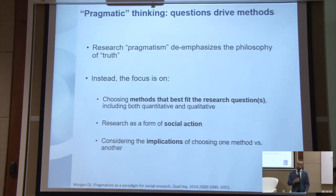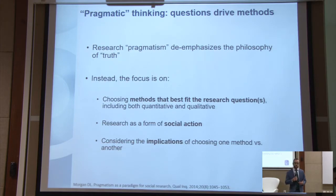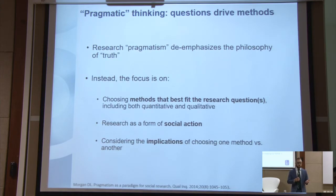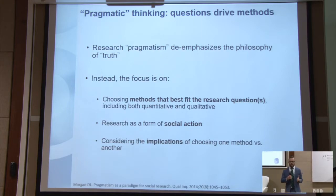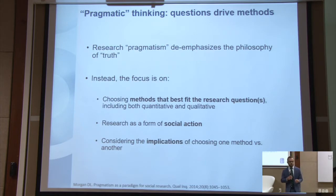Because of that, you have to think about the implications of choosing one method over another. Certain kinds of methods will be useful in raising the voice of marginalized communities that don't normally get heard — that's a choice researchers can make. Other implications may have to do with balancing precision with the timeliness of when results will be available. There may be a time window in which results will be most useful for informing a policy. So it's not just about finding the truth, it's also about what happens after that.